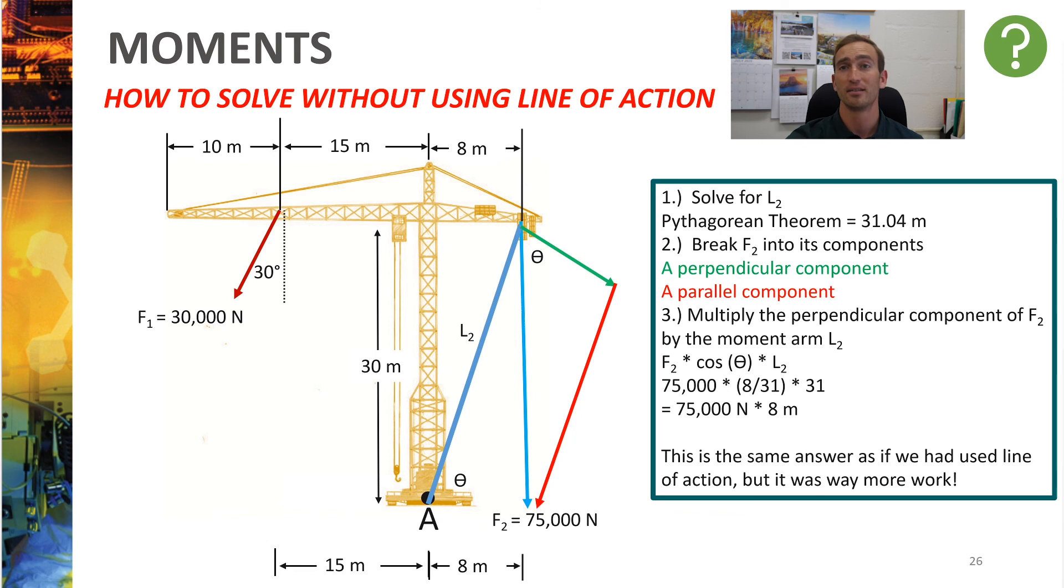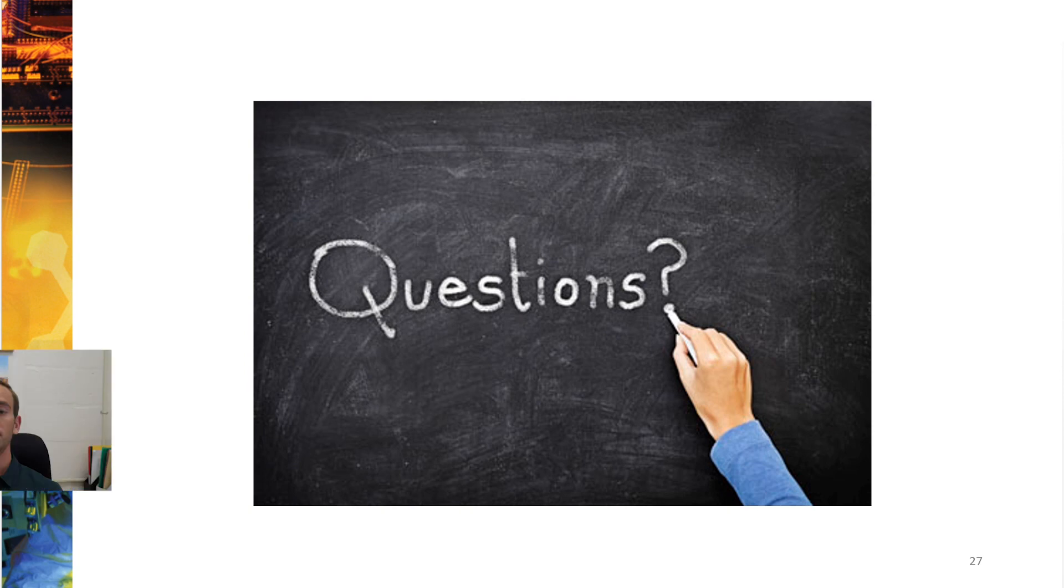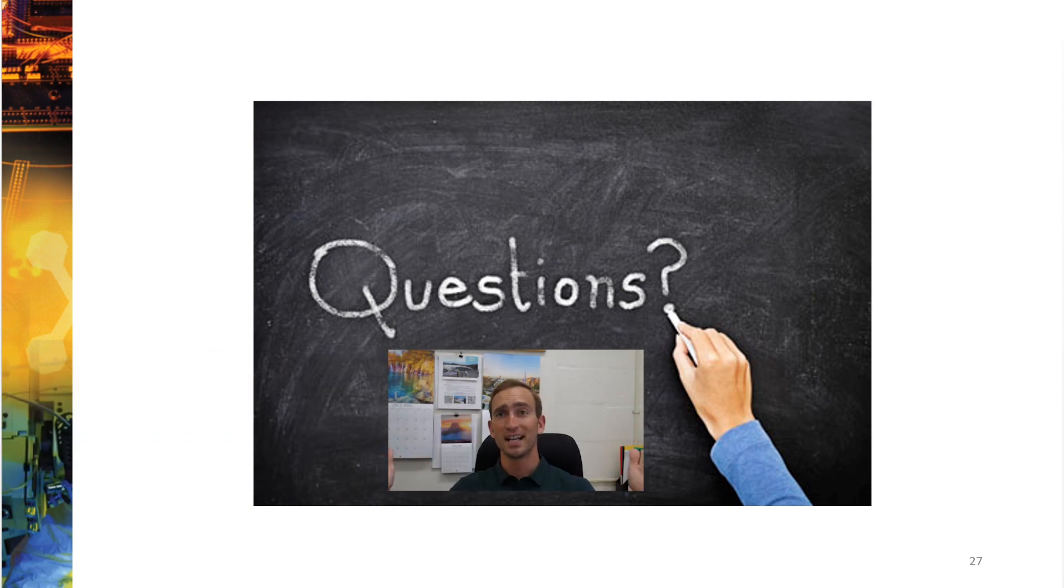So there you have it. It's not always best to use line of action. Well, there you have it. That's the end of this lecture. And what we're going to be doing in the next unit is talking more about free body diagrams and how to solve for systems using both the things you learned in the force components lecture as well as the moments lecture to determine whether a static body is in equilibrium. And that's what we'll do next time. See you then.